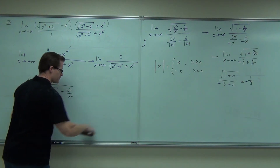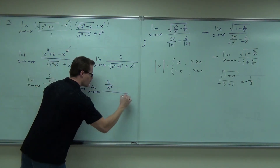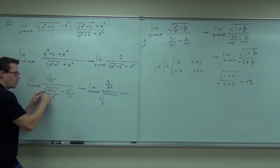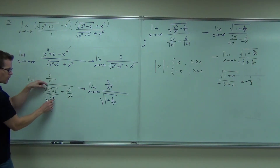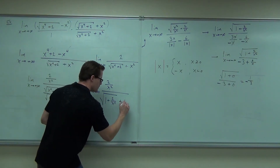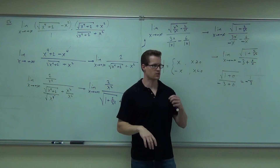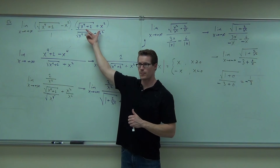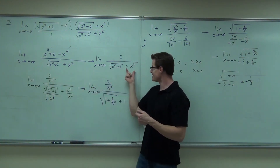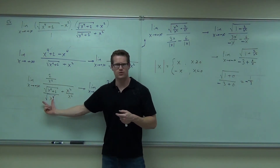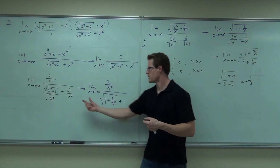So we're going to have 2 over x squared, all over the square root. If you think about it, this is going to be 1 plus 2 over x to the 4th. We get x to the 4th over x to the 4th plus 2 over x to the 4th, plus 1. x to the 4th over x to the 4th: that's 1. 2 over x to the 4th. x squared over x squared: that's 1.